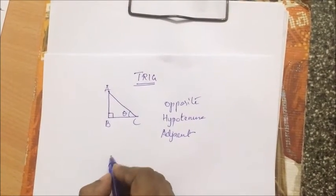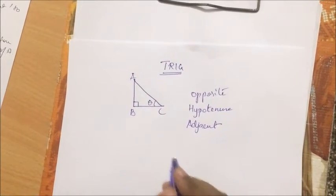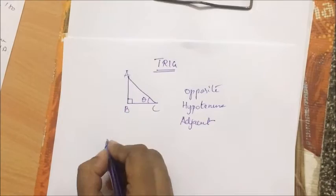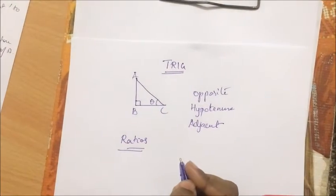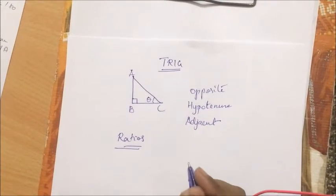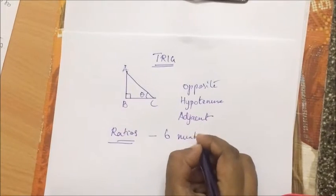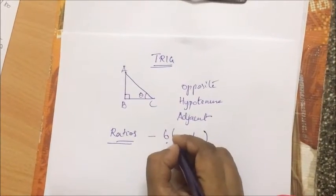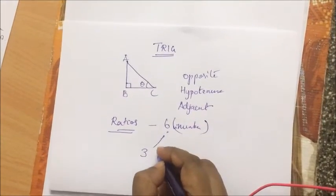As I said, trigonometry is a relationship between the angles and the sides of this triangle. So I have to have some kind of relationship, which is given as ratios—trigonometric ratios. The trigonometric ratios happen to be six in number.